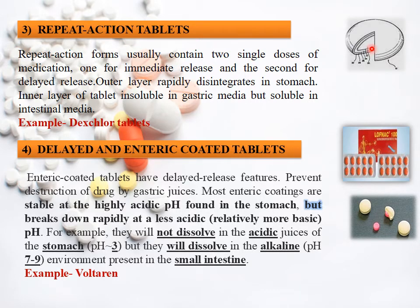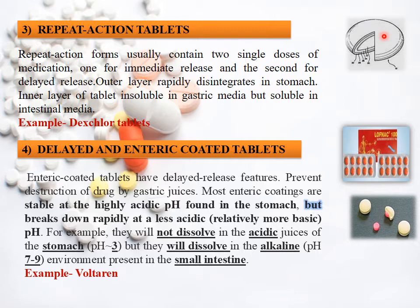Dexchlor tablet is an example of a repeat action tablet. Next is your delayed or enteric coated tablet. Enteric coated tablets are stable at highly acidic pH — meaning they are stable in the stomach — but their breakdown occurs in a less acidic environment. The stomach has a pH of about 3, where they do not dissolve. They dissolve in the alkaline environment of the small intestine, where pH is 7 to 9, showing delayed action. An example is Voltaren.